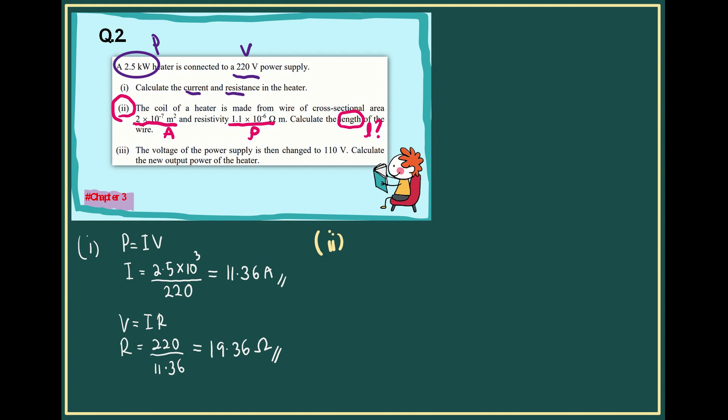we want to calculate the length of the wire. We are applying the equation rho equals RA over L, the basic equation. So to get length, it is equal to RA over rho.